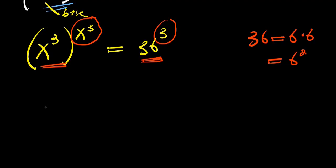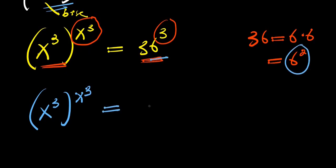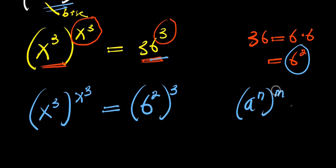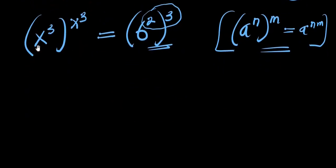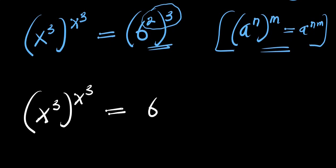So we are simply going to have x power 3, raised to the power of x power 3, and this equals 36 — that is 6 power 2 — raised to the power of 3. Now if you have a to the power of n raised to the power of m, this equals a power n times m. Applying this identity, we multiply the exponent: 2 times 3 equals 6. So we have x power 3, raised to the power of x power 3, equals 6 raised to the power of 2 times 3, that is 6.